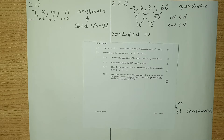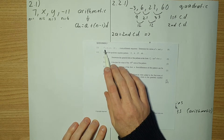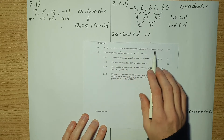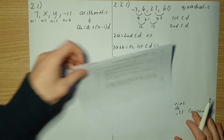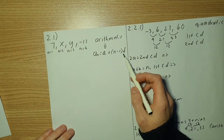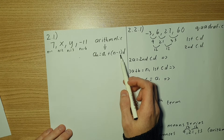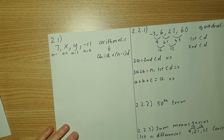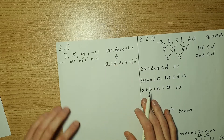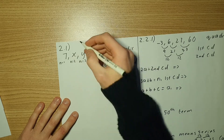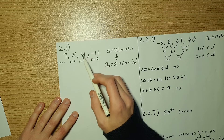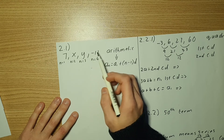Question 2.1 gives you the following sequence. They tell us it's an arithmetic sequence and they want us to find the values of x and y. Remember with an arithmetic sequence there's a first common difference. Note that x is the second term and y is the third term. The difference between 7 and x must equal the difference between x and y, which must equal the difference between y and negative 11.